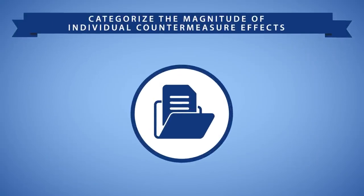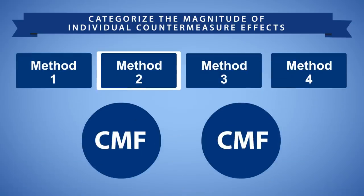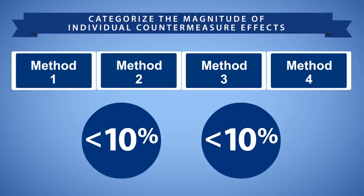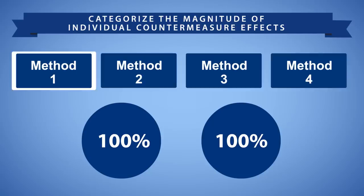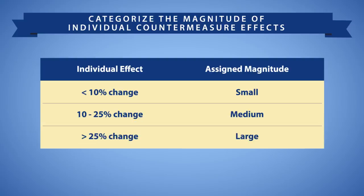Depending on the magnitude of the individual countermeasure effects, the methods selected to estimate the combined effect may have a nominal or significant impact on the result. For example, if both countermeasures are expected to reduce crashes by 10% or less, then the method you use to estimate the combined effect probably won't make much difference. As the magnitude of the effect increases, the methods produce much different estimates and it becomes more important to select an appropriate method. This table defines the magnitude of effect as small, medium, or large.